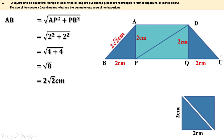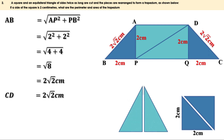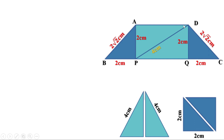Now let us take our equilateral triangle. Given that the sides of the equilateral triangle are 2 times the sides of the square, the sides of the equilateral triangle are 4 centimeters. This triangle is placed here, and its hypotenuse PD is 4 centimeters. In triangle PQD the hypotenuse is given and the altitude is also given, so we can find the base.